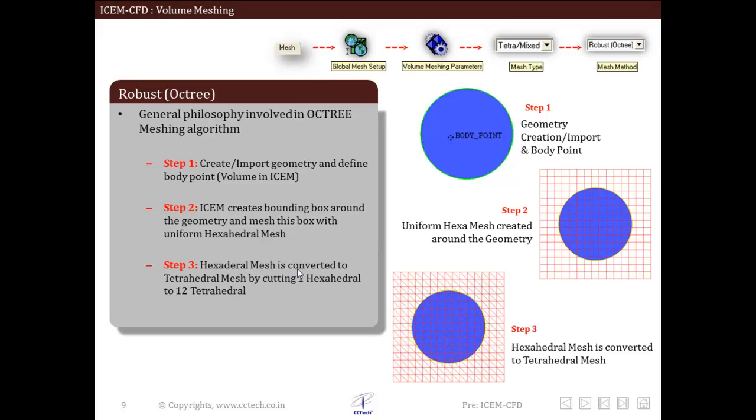In the next step, hexahedral mesh is converted to tetrahedral mesh by cutting 1 hexahedral to 12 tetrahedral. So this is the overall methodology within the octree algorithm or octree method.